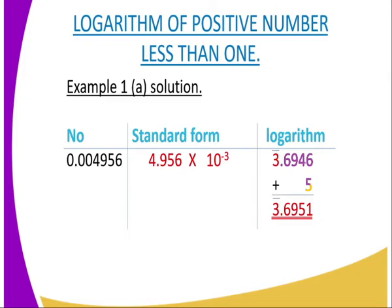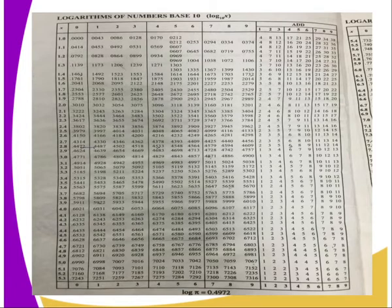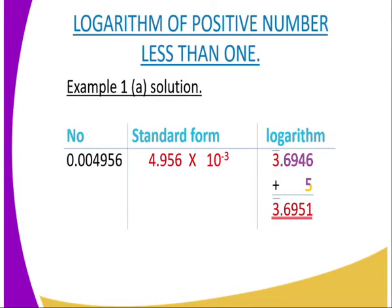Then you move to the differences column and go to column 6, dropping down to the row of 4.9. The number that coincides there is exactly 5. You add that 5, and after adding, you get the final answer as bar 3.6951. That is the logarithm of 0.004956.